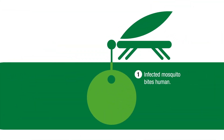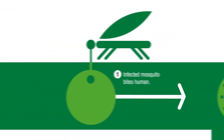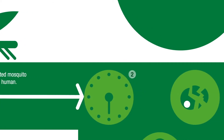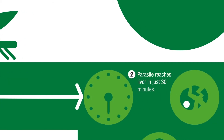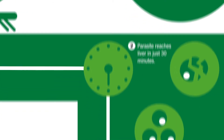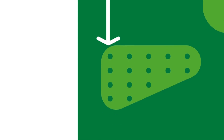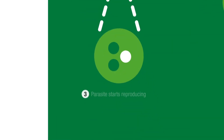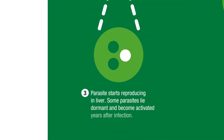An infected mosquito bites a human, and the parasite reaches the liver in just 30 minutes. The parasite then starts reproducing in the liver. Some parasites lie dormant and can become activated years after the initial infection.